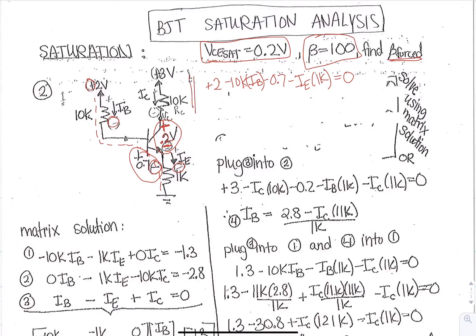So our other loop we're going to take is through the collector to the emitter. So we're going to use a plus 3 minus IC 10k minus 0.2, and then again a minus IE 1k. So the plus 3 minus 10k times IC minus 0.2 minus IE times 1k equals 0. And then our third equation is going to be that current summation. IB and IC is equal to IE.